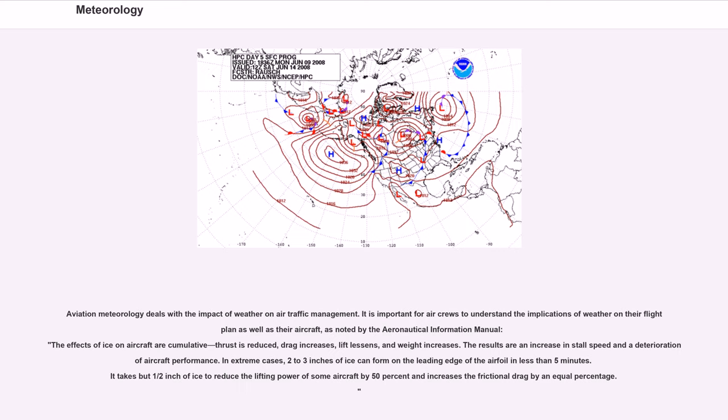Aviation meteorology deals with the impact of weather on air traffic management. It is important for air crews to understand the implications of weather on their flight plan as well as their aircraft. As noted by the Aeronautical Information Manual, the effects of ice on aircraft are cumulative: thrust is reduced, drag increases, lift lessens, and weight increases. The results are an increase in stall speed and a deterioration of aircraft performance. In extreme cases, two to three inches of ice can form on the leading edge of the airfoil in less than five minutes.